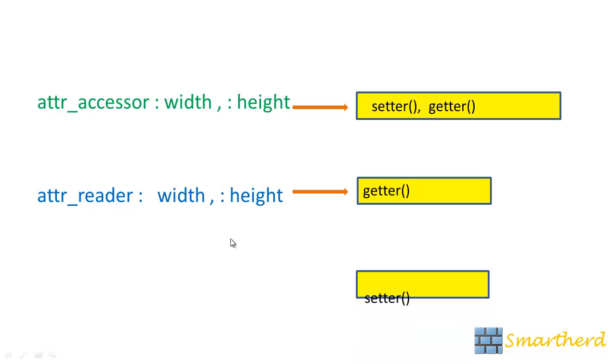Now what if we want only a setter. For that purpose we are having a keyword attr underscore writer. So in this case also all the syntax are same except attr writer replaces attr reader.